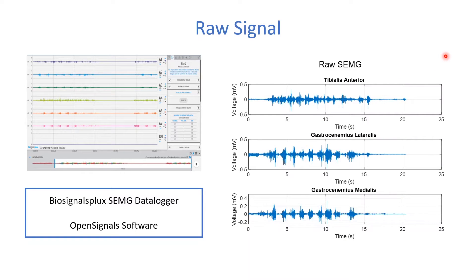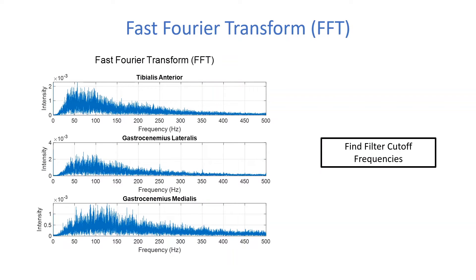So, to create the filter, the cutoff frequencies have to be found. And to do this, a fast Fourier transform can be performed or an FFT. When I performed an FFT for my signal, I obtained a plot of frequency versus their intensities. These are the frequency ranges that are contained within my signal. And by analyzing this plot, we can decide on cutoff frequencies.